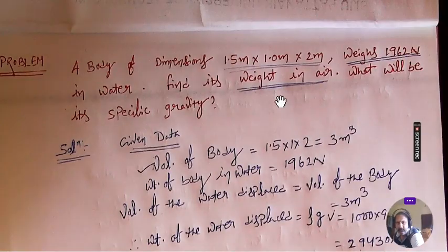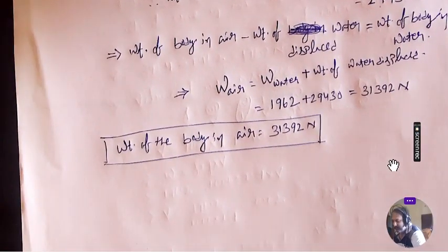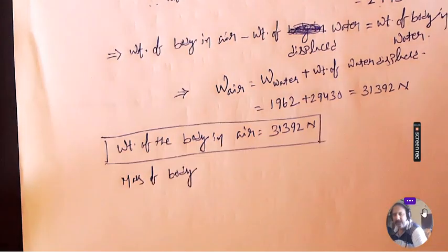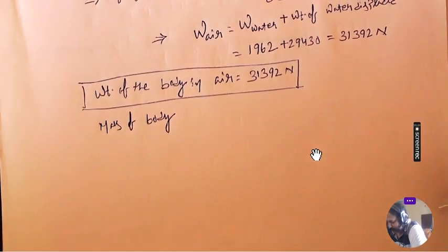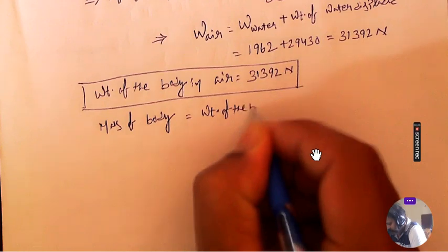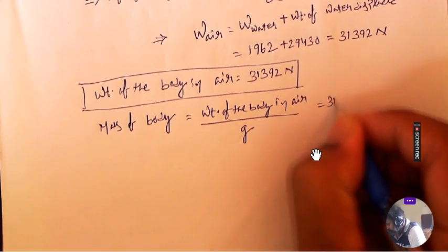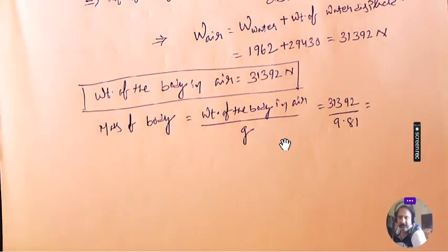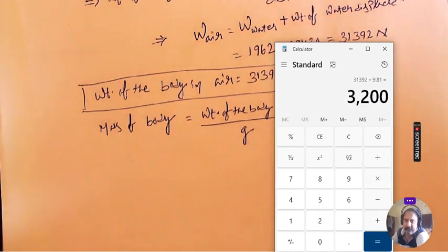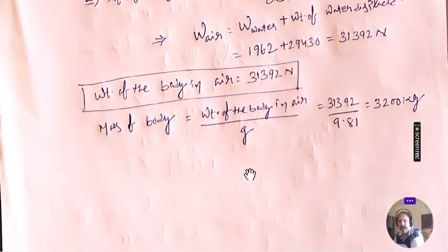The second part of the problem: we have found the weight in air. Now let us find the specific gravity of the body. The mass of the body is weight in air divided by g. So 31,392 divided by 9.81 gives us 3200 kg. This is the mass of the body.